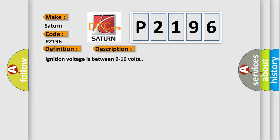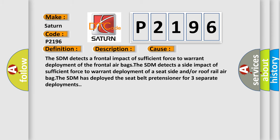And now this is a short description of this DTC code. Ignition voltage is between 9 to 16 volts. This diagnostic error occurs most often in these cases: The SDM detects a frontal impact of sufficient force to warrant deployment of the frontal airbags. The SDM detects a side impact of sufficient force to warrant deployment of a seat side and/or roof rail airbag. The SDM has deployed the seat belt pretensioner for three separate deployments.